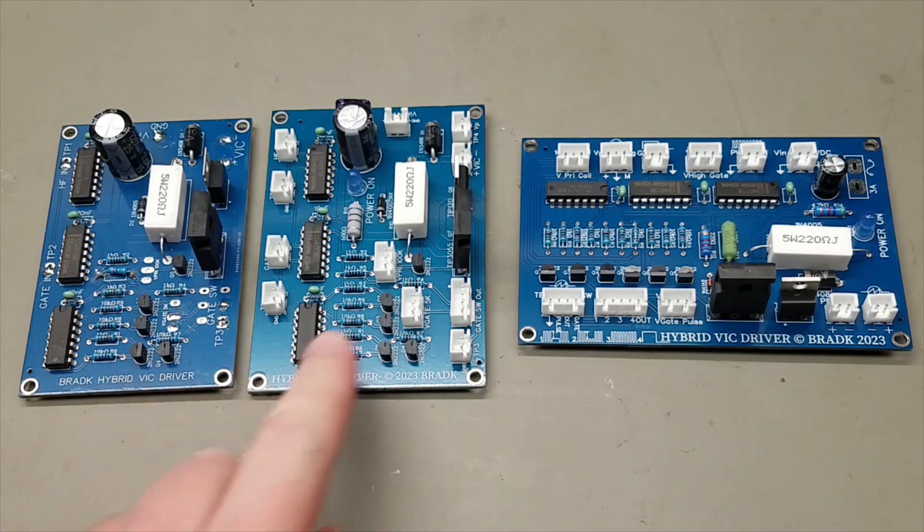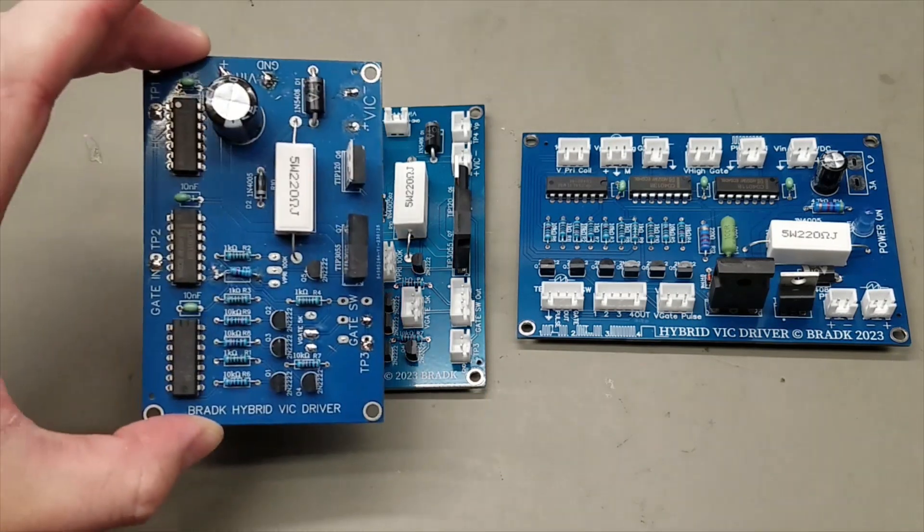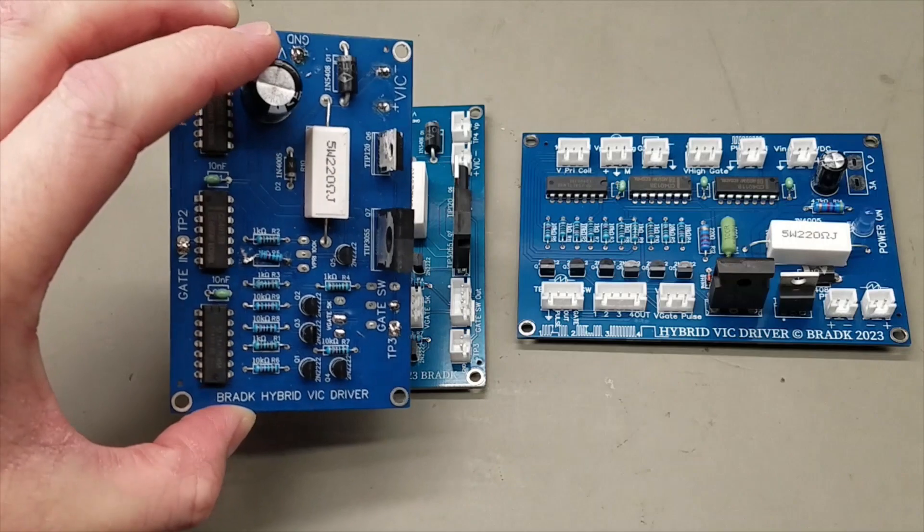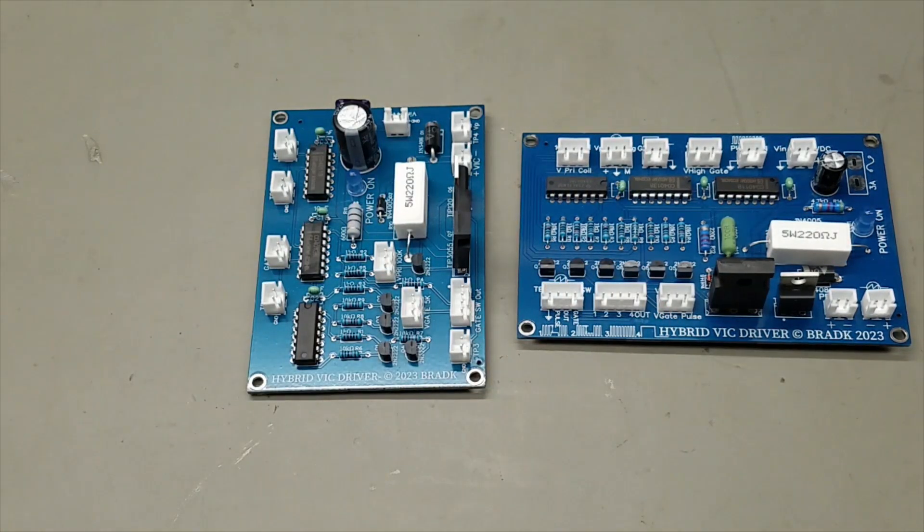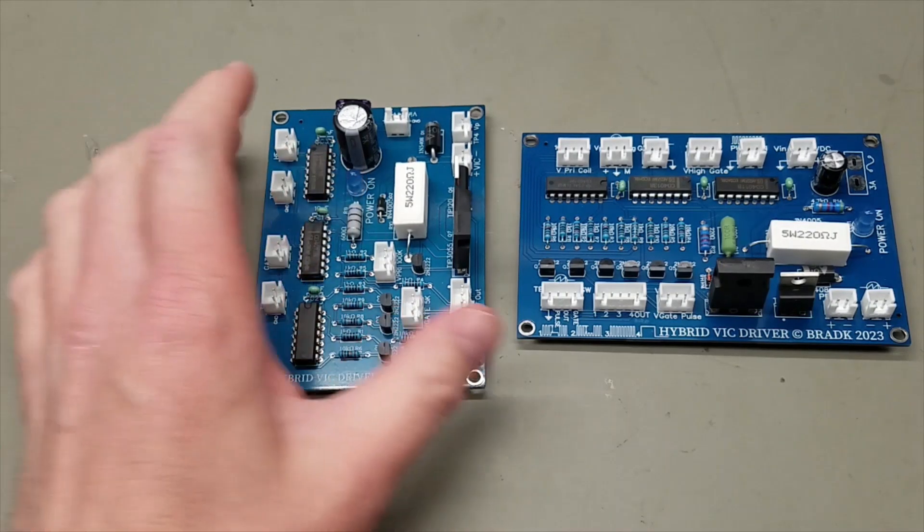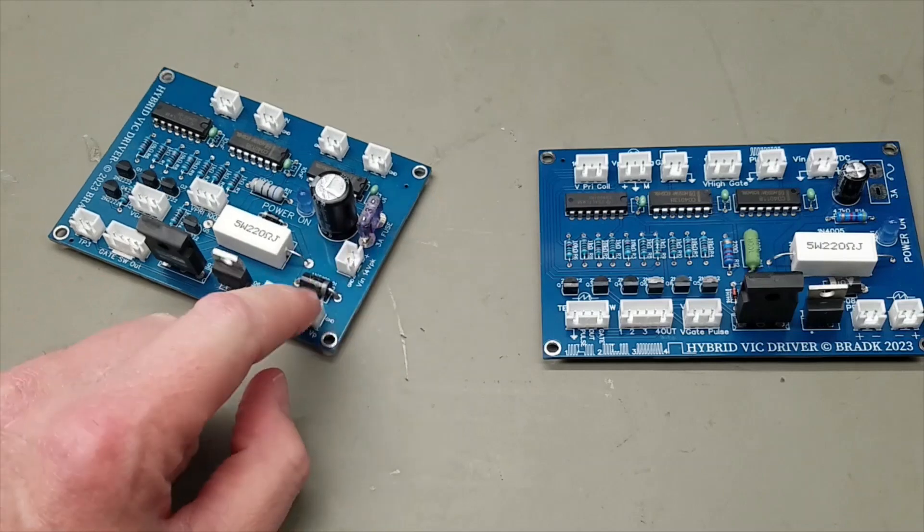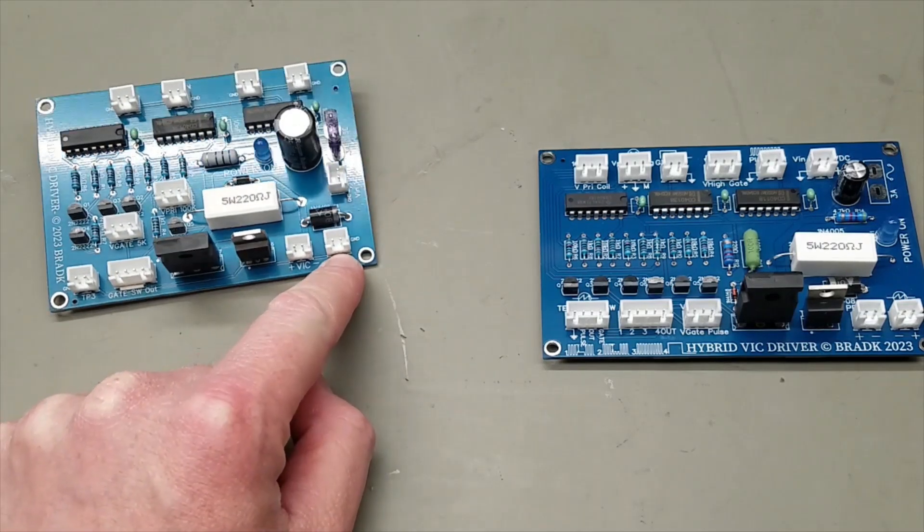Alright, so here's version 1, version 2, and version 3 of my hybrid VIC driver. First version, I just wanted to make it simple and functional. Worked pretty well. I had one mistake on the bottom, so I decided it's a good opportunity to make it better. In version 2, I had a JST connector, an LED on indicator, a 3 amp fuse, and a test point to look at the waveform across the primary coil.